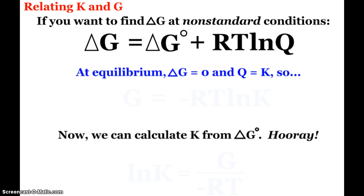And so when we're looking at equilibrium delta G is equal to zero. There's no free energy change at equilibrium and Q of course is equal to our equilibrium constant. So we can rearrange that equation since delta G is equal to zero and we get that our standard delta G is equal to negative RTlnK.